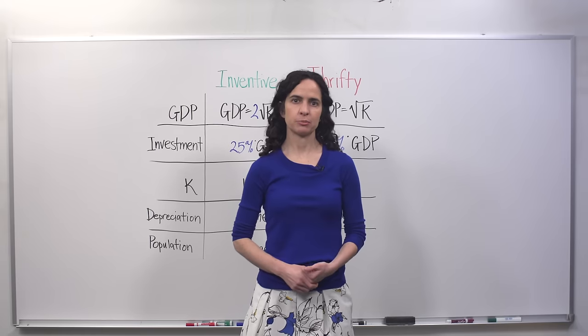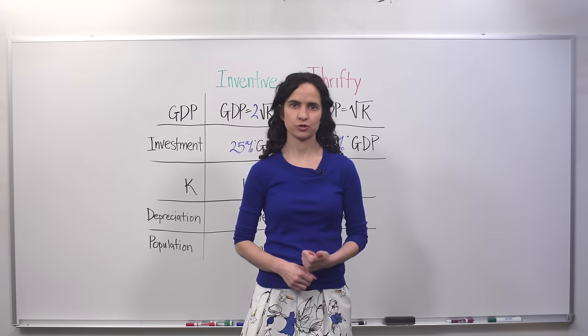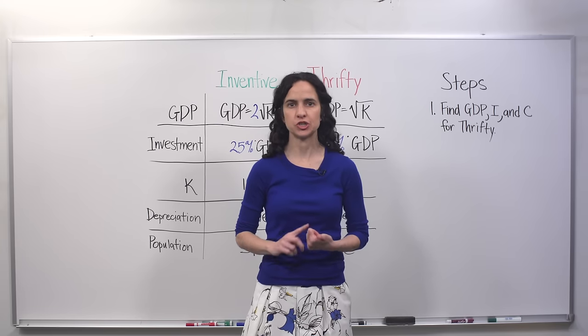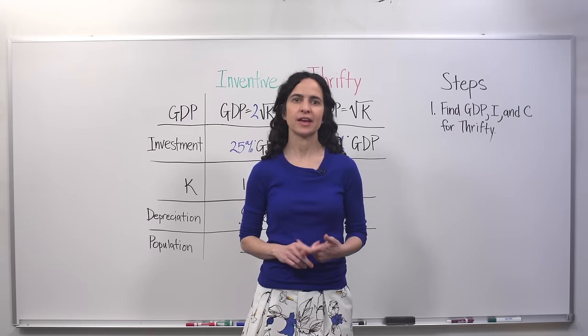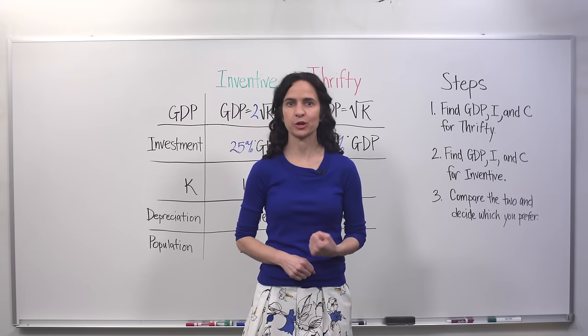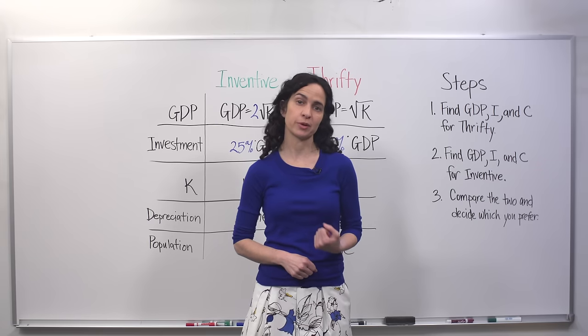So to outline our steps for solving the problem, we'll first track Thrifty's economic prospects on those three dimensions: GDP, investment, and consumption. We'll then do the exact same thing for Inventive, and finally we'll compare the two to decide where we'd rather live.